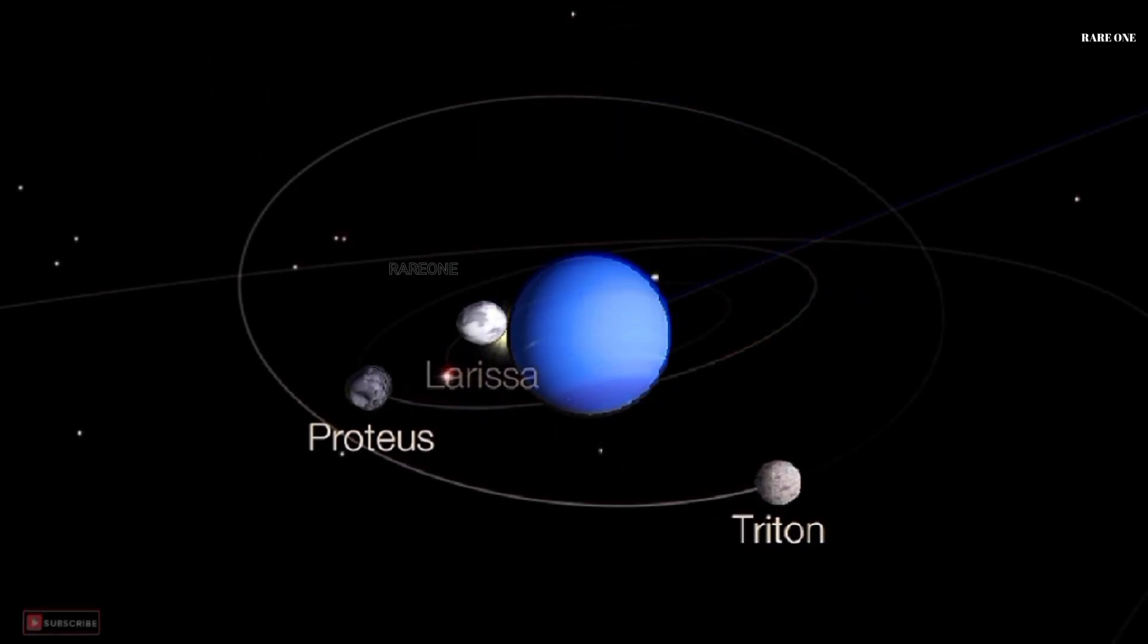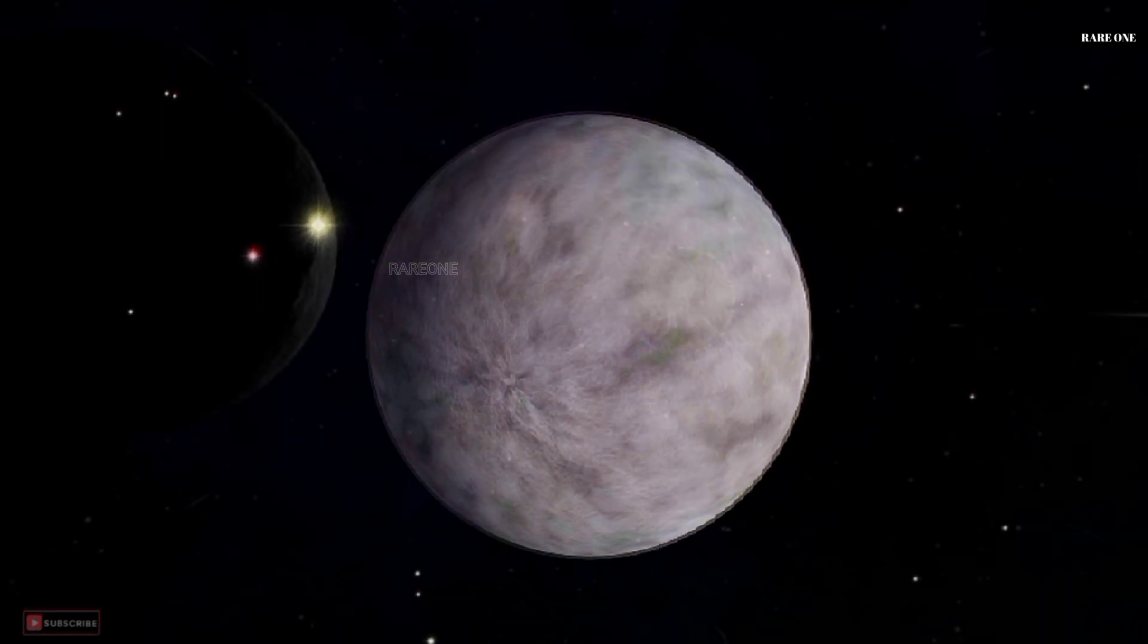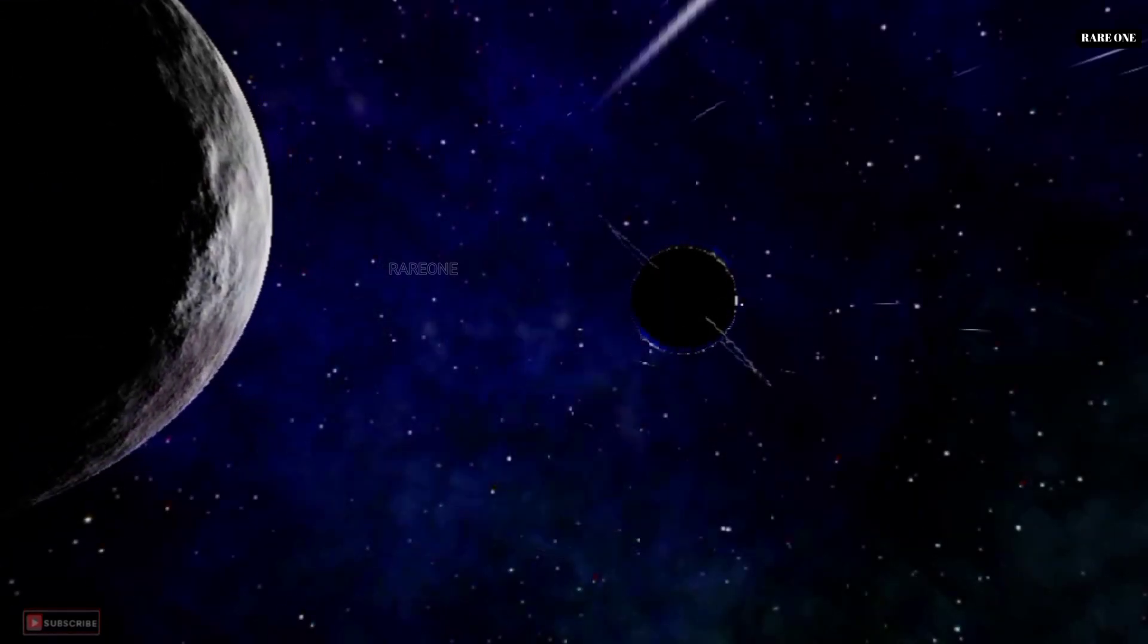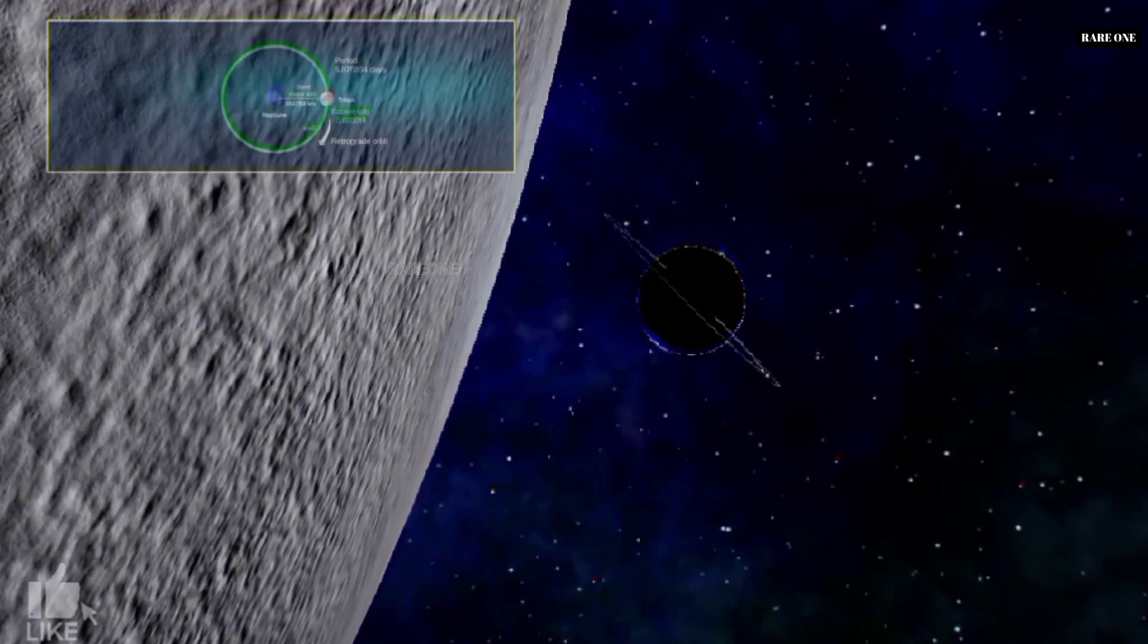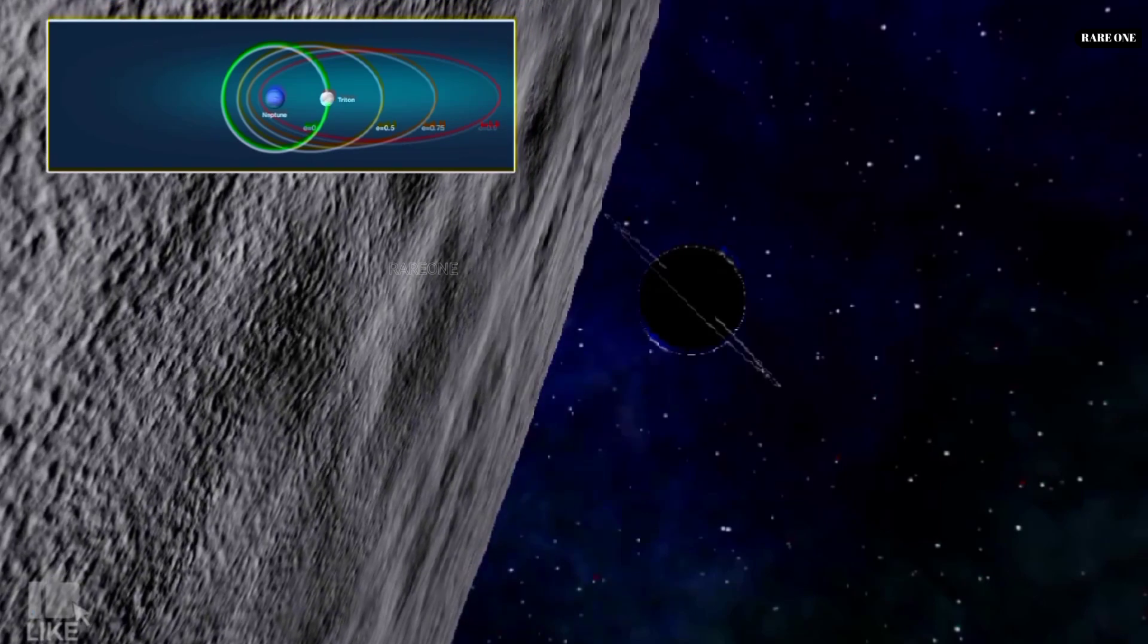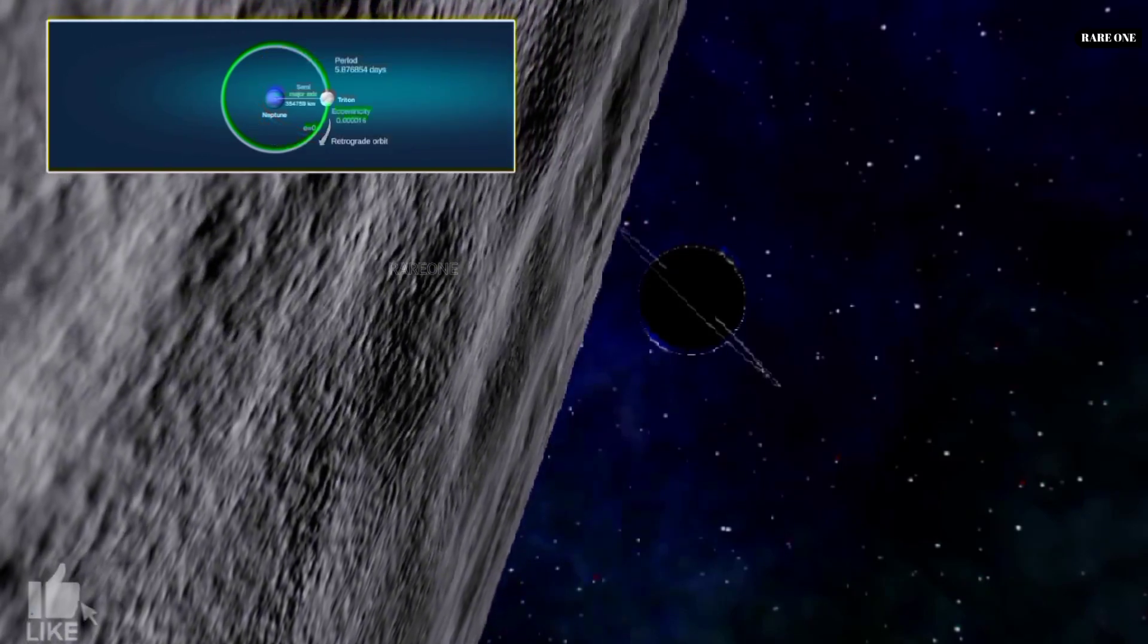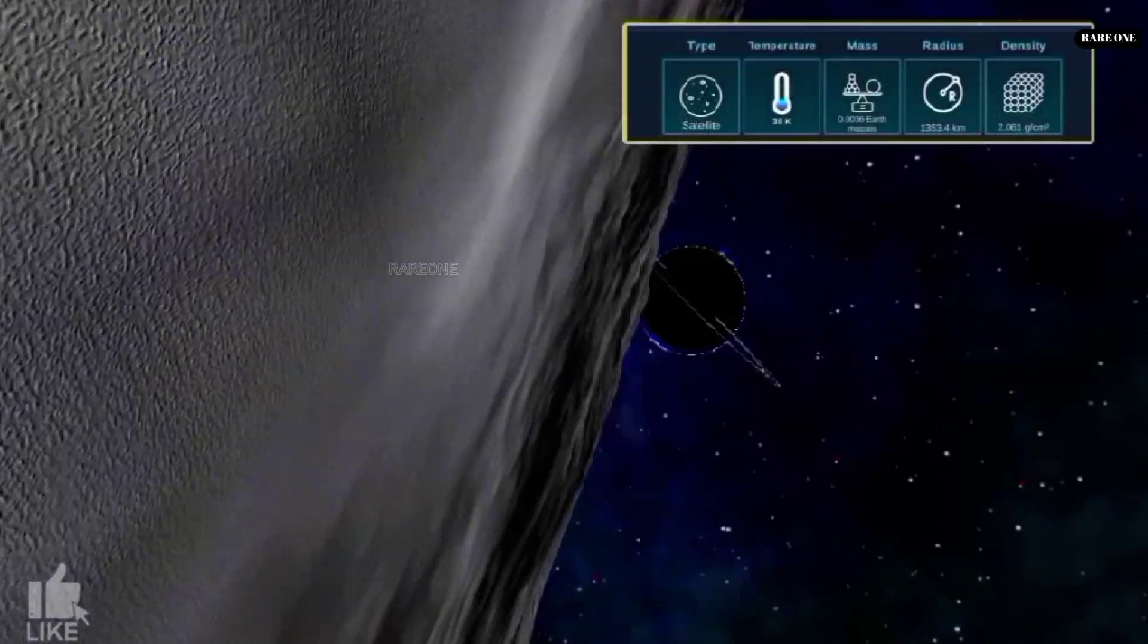Neptune boasts an impressive retinue of 16 known moons, the largest of which is Triton. This celestial companion was discovered just 17 days after Neptune itself and has the honor of being the only large moon in our solar system to orbit its planet in a backward, retrograde direction. Scientists believe Triton may once have been an independent object that Neptune captured.